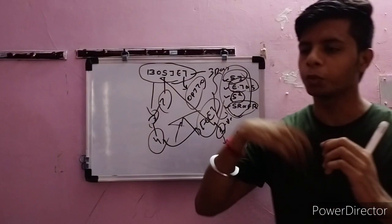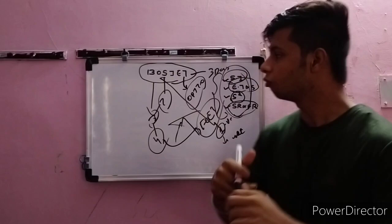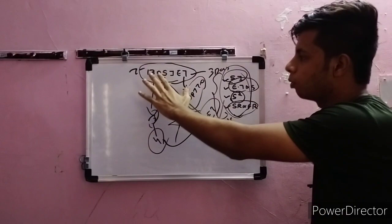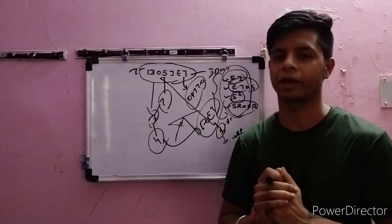When you go to any institute for BOSIET or FOET, they will tell you there are two types of each course. First is BOSIET, and second is T-BOSIET — Tropical BOSIET. The full name remains the same but with 'Tropical' added. Similarly there are two types of FOET courses. Let me explain the difference.